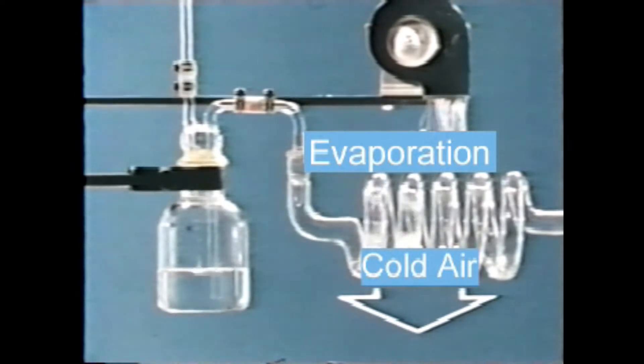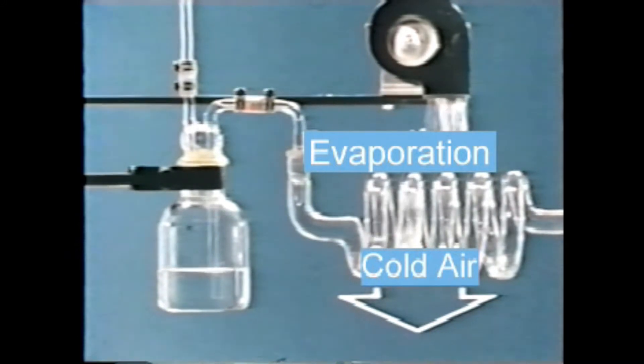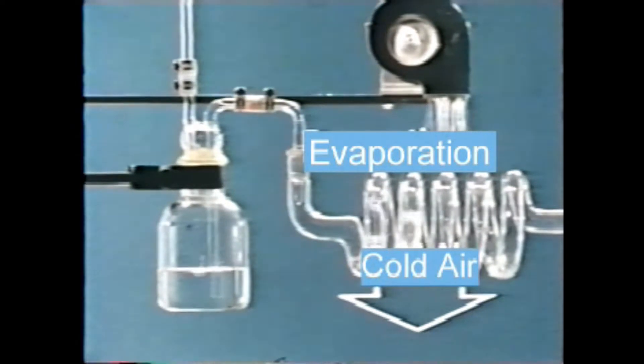You evaporate ethyl in a tube to take heat from the surrounding air. Having its heat taken away, the air in turn will remove heat from the room. That's the basic theory of the refrigeration system.